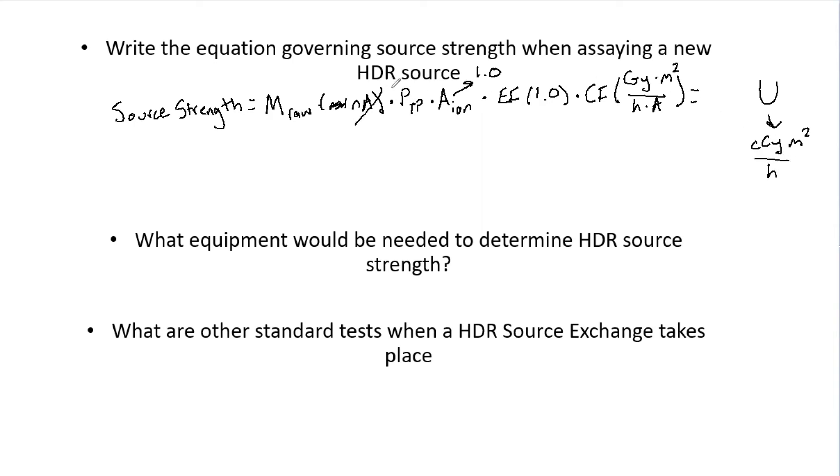So you know, here's nanoamps and amps, those will cancel out, and you may have to do a little conversion here, but you will get U as your final unit. So that is how you determine the source strength.